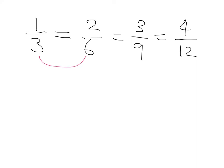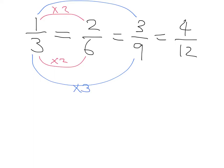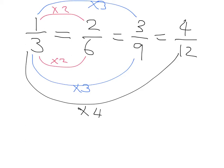If I take three and multiply it by two I get six, and if I take one and multiply it by two I get two. If I take three and multiply it by four I get twelve, and if I take one and multiply it by four I get four. That gives me an idea of how I can find equivalent fractions: as long as I multiply the top of the fraction and the bottom of the fraction by exactly the same number, I will get an equivalent fraction.